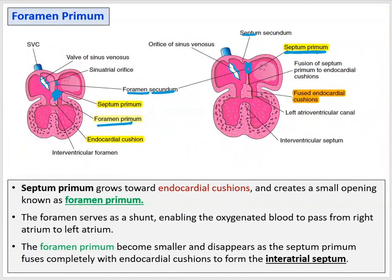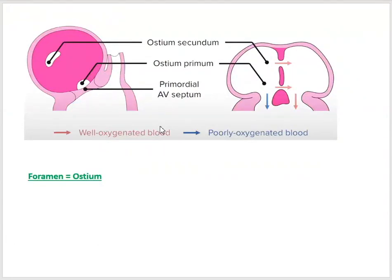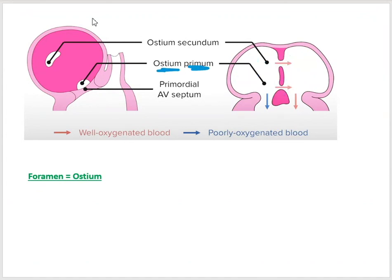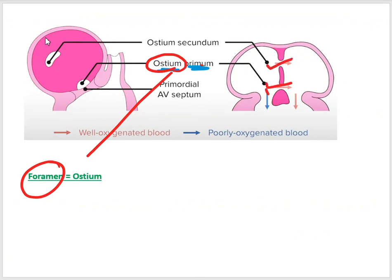We have another wall besides the septum primum — the septum secundum — that also descends from the roof of the atrium to partially close this opening. To summarize: foramen primum closes, and foramen secundum opens, ready to shift blood from right to left. Note that 'ostium' is the same as 'foramen,' so you can use ostium primum, ostium secundum, foramen primum, or foramen secundum interchangeably.